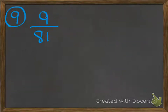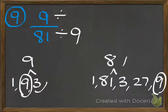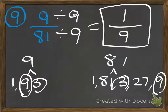Number 9: 9 eighty-firsts. If you find all the common factors of 9 and 81, you would see that 9 is the greatest common factor — though 3 is also a common factor. So I'm going to divide both of these numbers by 9. 9 divided by 9 is 1, and 81 divided by 9 is 9. So 1 ninth is the simplest fraction.